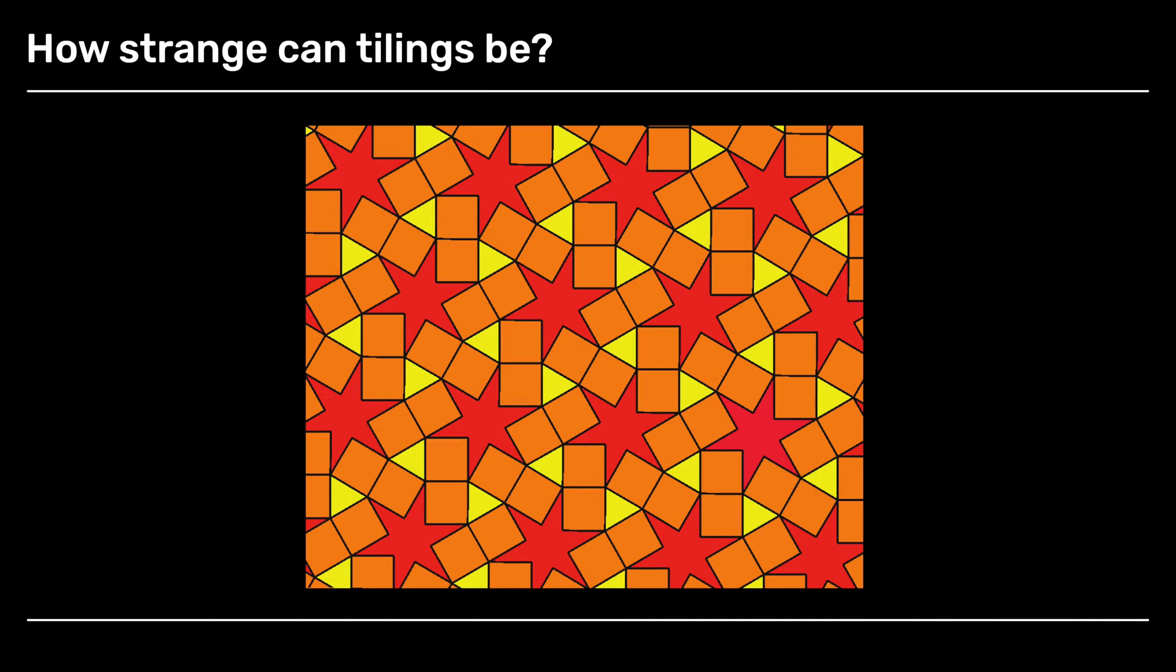Here is a tiling with three different shapes of tiles: again, an equilateral triangle, a square, and a star. This is a very pretty tiling.